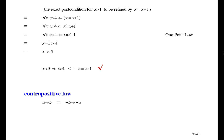a implies b is the same as not b implies not a. So we can rewrite the specification to say, if x starts out less than or equal to 4, then it will end up less than or equal to 5.